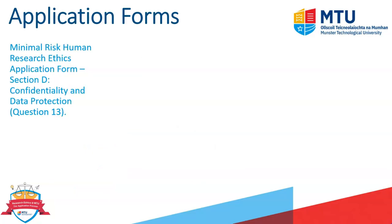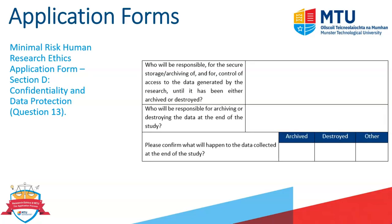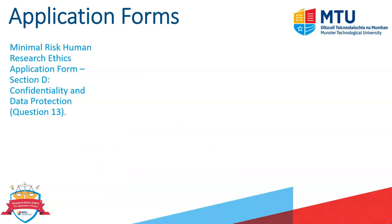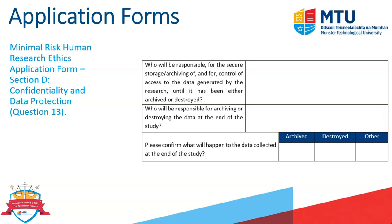In the minimal risk application form question 13, you're asked who will be responsible for the storage and archiving of the data — this is different from who controls the data. Here you state who is responsible for the secure storage, archiving, and control of access to the generated data. This is especially important in studies with many collaborators, to clearly outline who is responsible for archiving or destroying the data at the end of the research study, so that data is not simply left unmanaged.